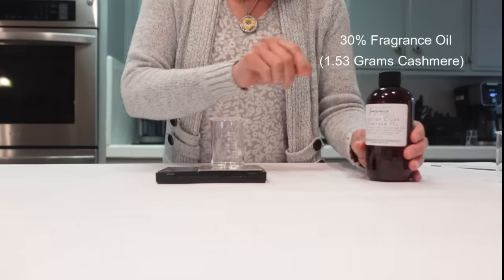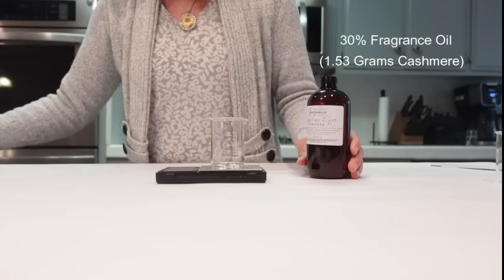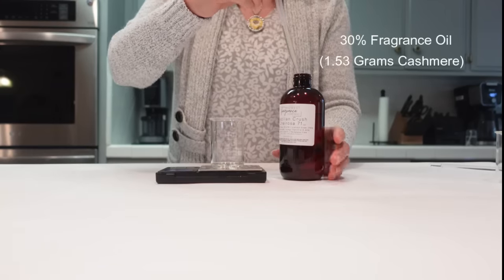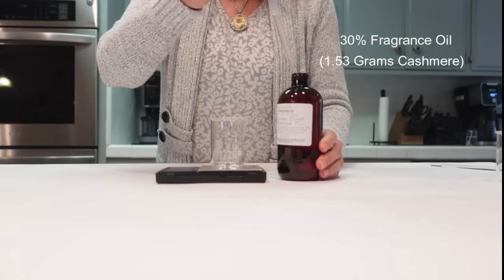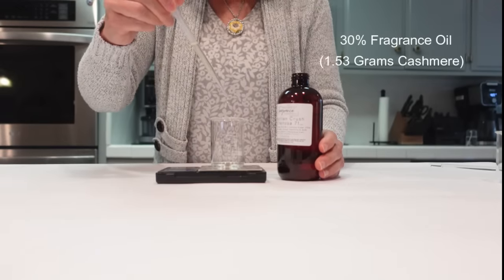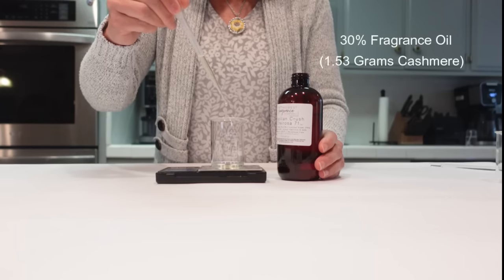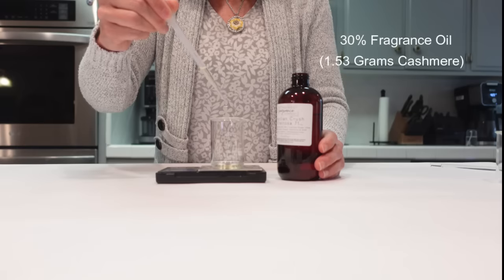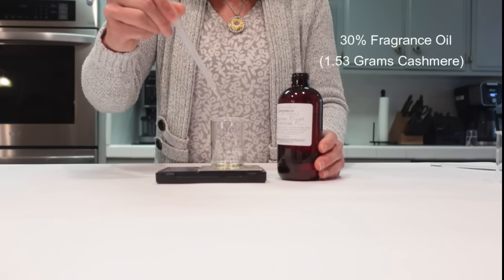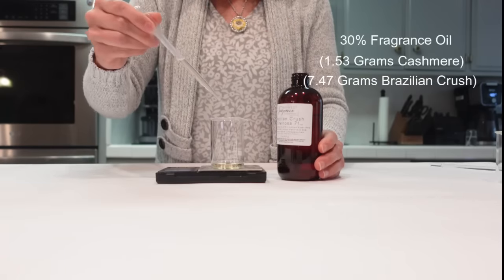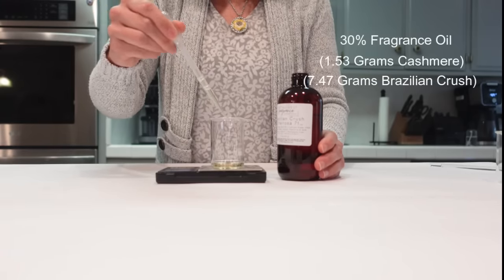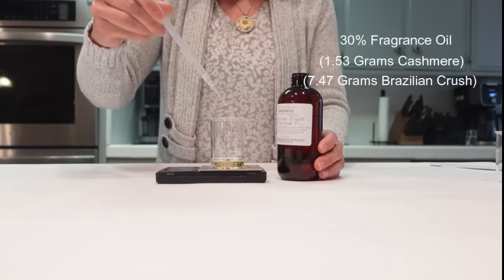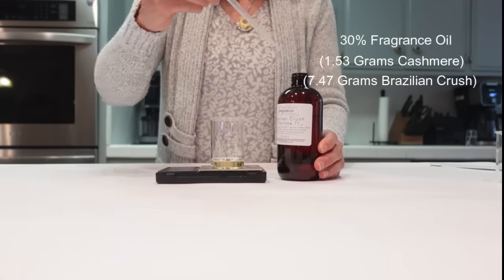Next, I'm going to go ahead and add in my Brazilian crush. Now, something to note too. I go into a lot more detail in my other videos regarding usage rates. But when formulating this, I did check all the usage rates and make sure I wasn't going over any usage rates for perfume. Each fragrance oil comes with its own usage rate for each category. So you need to check your usage rates for perfumes. On the IFRA chart, that is category four. So we are squeezing in here 7.47 grams of Brazilian crush.